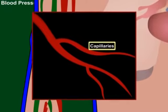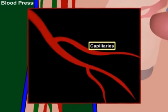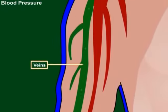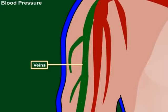The blood pressure gradually decreases as the blood flows into capillaries. When this blood is collected in veins, blood pressure is greatly reduced.